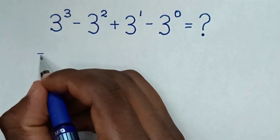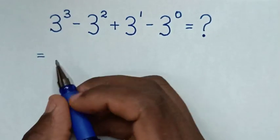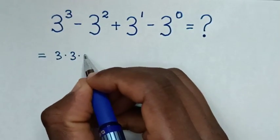So this is equal to 3³, which is the same as 3 × 3 × 3.